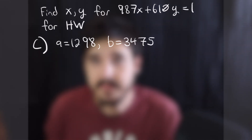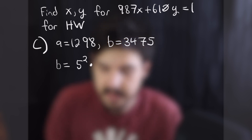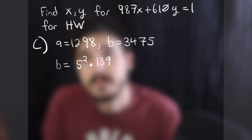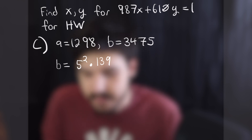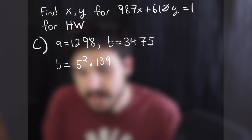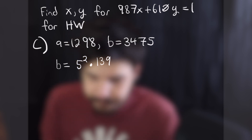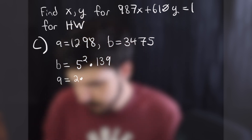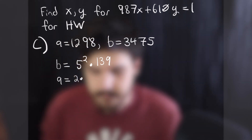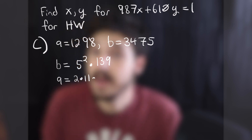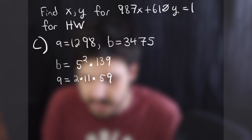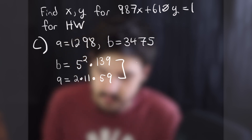Starting with 3475: dividing by 5 gives 695, which also ends in 5. Dividing again by 5 gives 139, which is prime. So 3475 equals 5 times 5 times 139. For 1298: starting with 2 gives 649. Dividing by 11 gives 59, so 1298 equals 2 times 11 times 59. None of those prime factors are shared with 3475, which only has 5 and 139, so the GCD of these two is also 1.